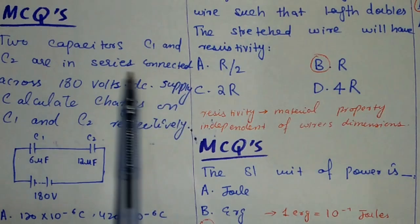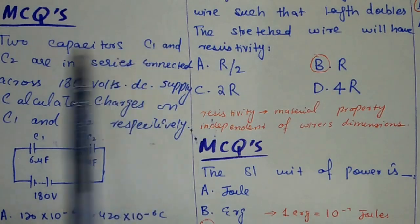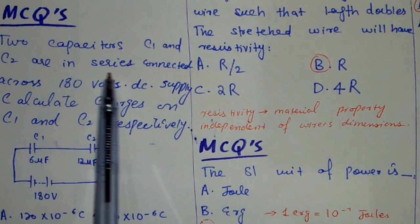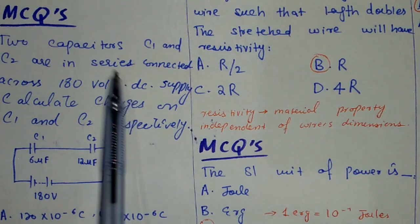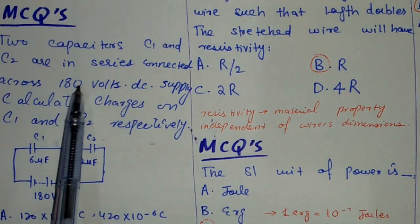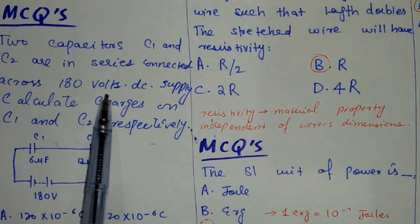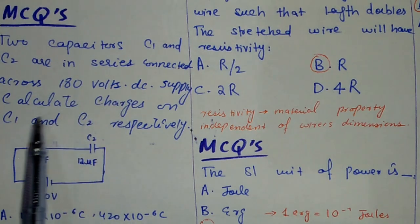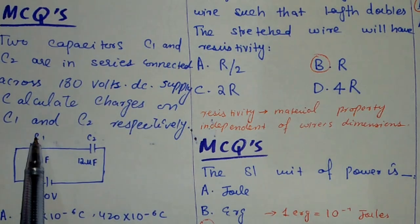Here we are with the very first MCQ. It says two capacitors C1 and C2 are in series. Two capacitors are connected in series and the potential difference is 180 volts. We have to calculate charges on C1 and C2 and interrelate them together.